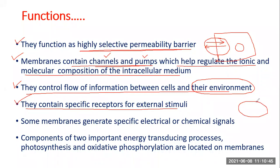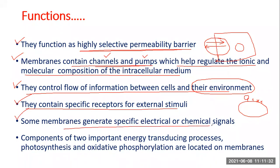The cell surface is inundated with specific receptors. Think of a large apartment building with many TV antennas on the roof — similarly, receptors are spread all over the cell membrane. These receptors are specific for external stimuli: the stimuli bind to the receptors and the signal is communicated within the cell. Some membranes also generate specific electrical or chemical signals — for example, the nerve cell membrane generates an electrical nerve impulse.